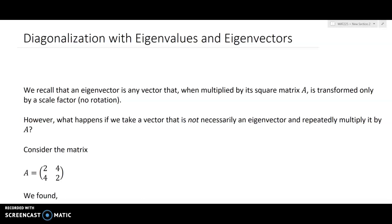So an eigenvector is any vector that, when multiplied by its square matrix A from which it is a member, is transformed only by a scale factor, no rotation. So that's the geometric interpretation.